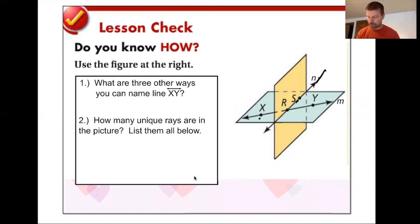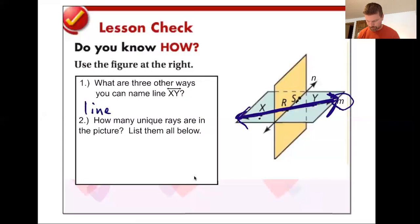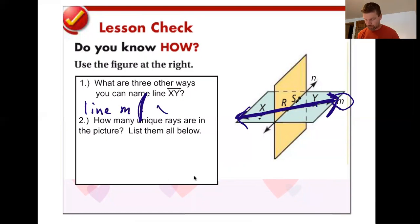For those that stayed and want to see the lesson check: question one says, what are three other ways you can name line XY? Well, line XY is this one right here because it has X and Y on it, and it's got one of those little lowercase letters on it. So I could call that line M. To name a line you just need any two letters on it — we already have XY, so I could call it XR with the line symbol, or RY — just any two points that are on the line.